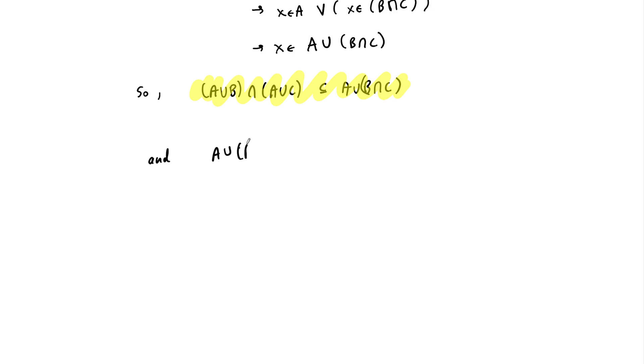So A union the intersection of B with C is actually equal to, as a set, A union B intersected with A union C. And remember our symbol that we put at the end of our proofs is like a morbid tombstone with a smiley face.